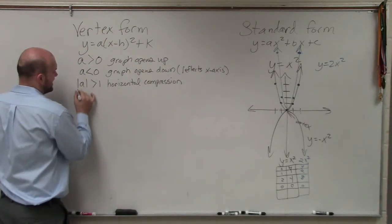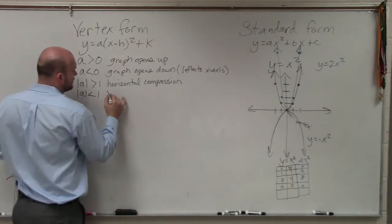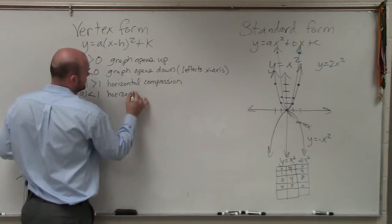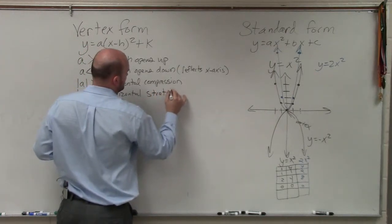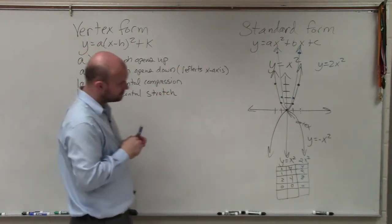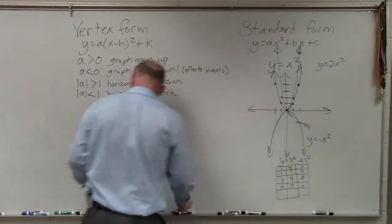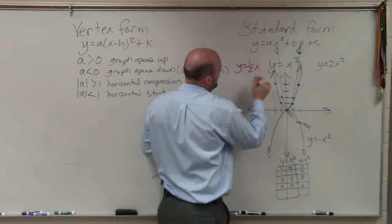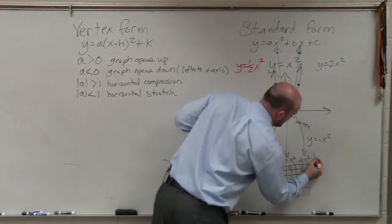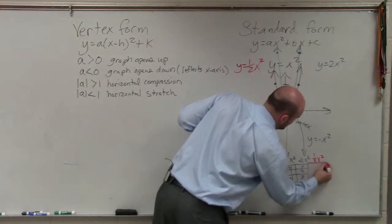If the absolute value of a is less than 1, then the graph is horizontally horizontal stretch. So let's look at another one. Let's choose red. Let's do y equals 1 half x squared.